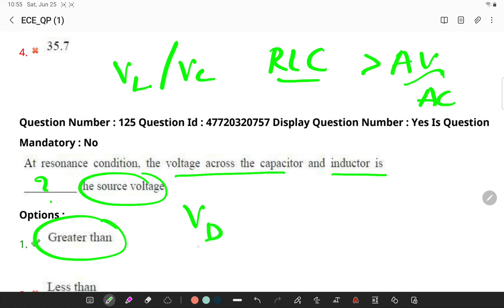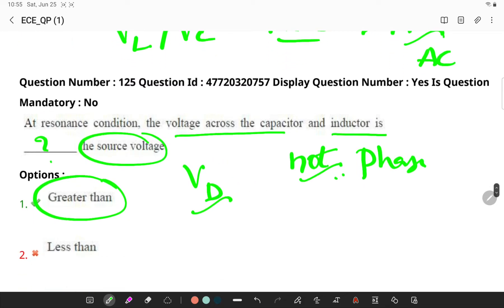This is because the voltage drop across the two elements are not phase voltages. Hence, the summation of their voltage cannot be done algebraically. Only vector summation concept is allowed in this case.